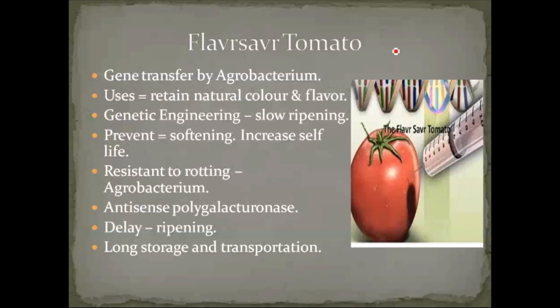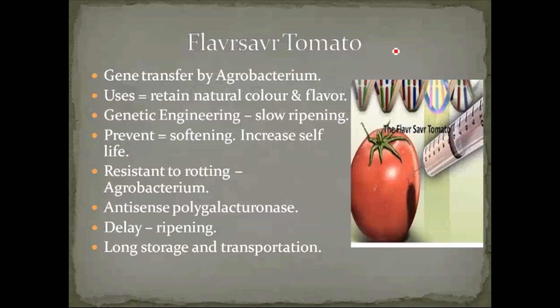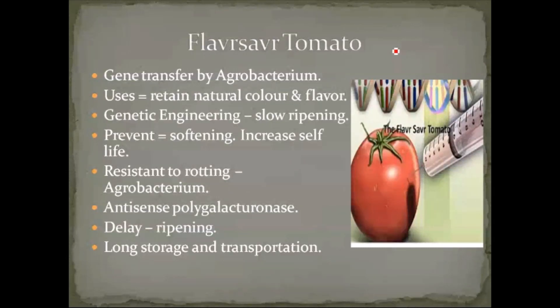This transgenic Flavor Saver Tomato was created by using an organism called Agrobacterium tumefaciens, which is a soil-living bacteria. Same way as how we produce recombinant DNA — isolation of a plasmid and removal of the tumor-inducing gene — in that gap we insert a gene for maintaining the aroma of the fruit and for maintaining the solid state of the fruit. So for maintaining the color and flavor of the tomatoes, we are introducing transgenic plants.